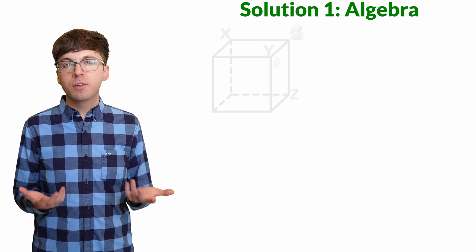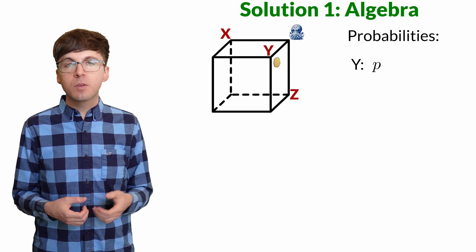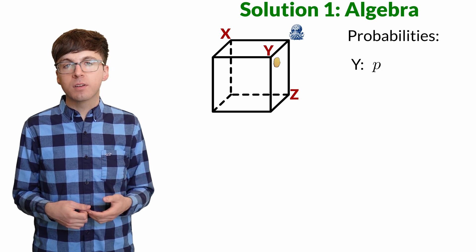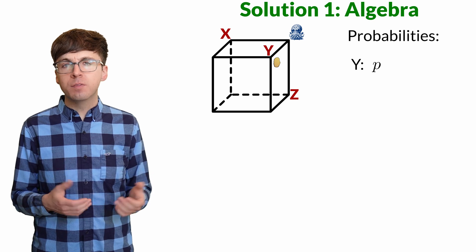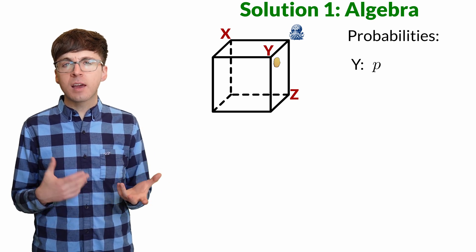Now let's apply this reasoning to the cube. Let's say p is the probability that we feed the monster. Then there's a one minus p probability that one of the other two people feeds the monster. Let's call these x and z.